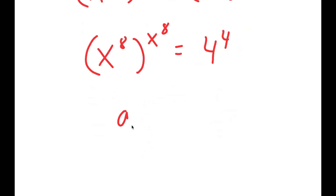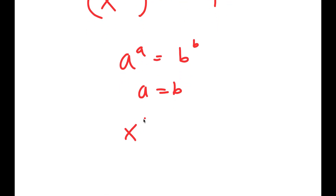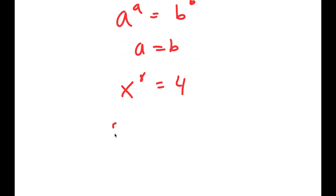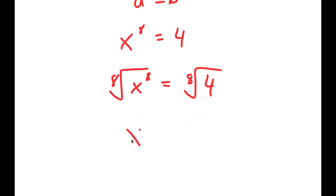Because this is in the form a to the power of a equals b to the power of b, this means a equals b. So x to the power of 8 equals 4. Taking the 8th root on both sides, x equals the 8th root of 4.